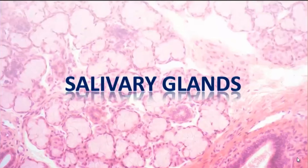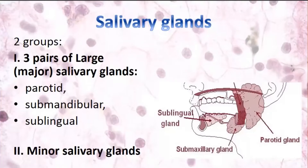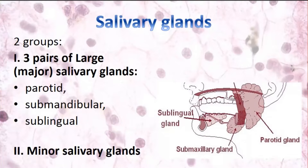Today we'll talk about digestive glands and we'll begin from salivary glands. They produce saliva. We have two groups of salivary glands. There are major salivary glands — large salivary glands. They are paired. There are parotid glands, submandibular glands, and sublingual glands. So three pairs of major large salivary glands. They have big volume and are located in the tissues which surround the oral cavity. They have ducts which are opened in the oral cavity.